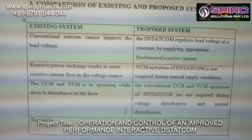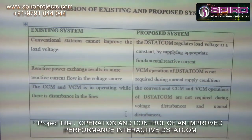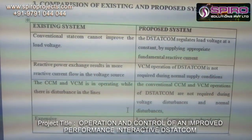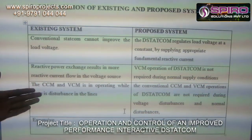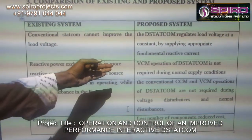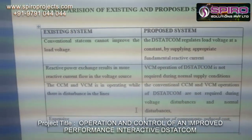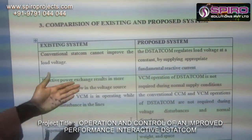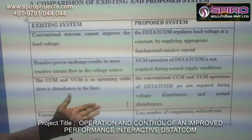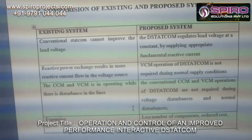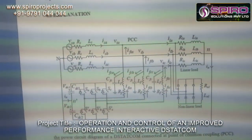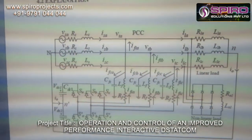That is why we are going for the proposed system. If I am using the proposed system, I can be able to maintain the constant voltage and constant power in the transmission line. That is why I am using a VZM operation for DSTATCOM. It is not required during normal supply condition. That is why I have fewer components, reduced cost, and reduced weight and space also in the proposed system. This is the advantage of the proposed system.